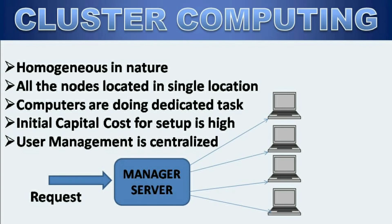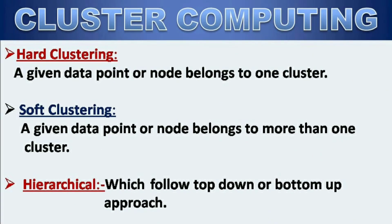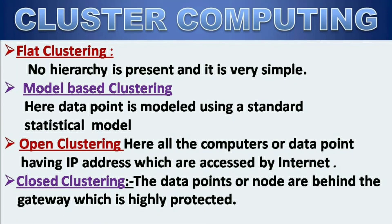Now let's look at the types of cluster computing. First, hard clustering: a given data point or node belongs to exactly one cluster. Soft clustering: a given data point or node belongs to more than one cluster. Hierarchical clustering follows a top-down or bottom-up approach. Flat clustering has no hierarchy present and is a very simple model.